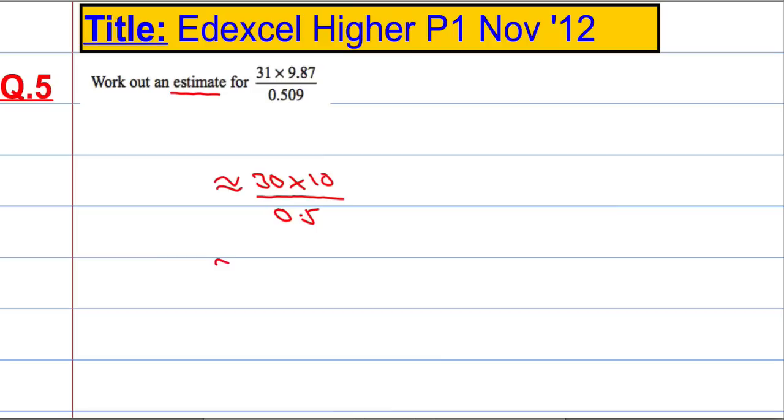So, that is approximately equal to, well, 30 times 10 is 300 over 0.5. And dividing by 0.5 is the same as timesing by 10,